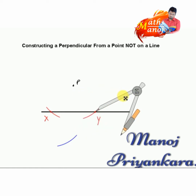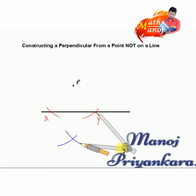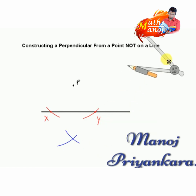Then we keep the sharp point of the compass on Y and draw an arc to cut the previous arc. Now we name that intersection point as A.